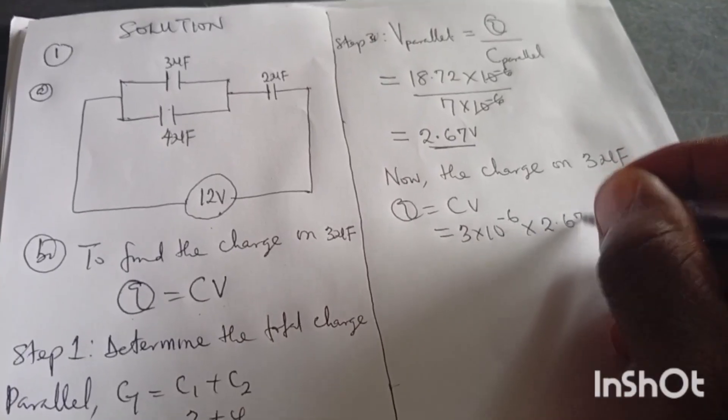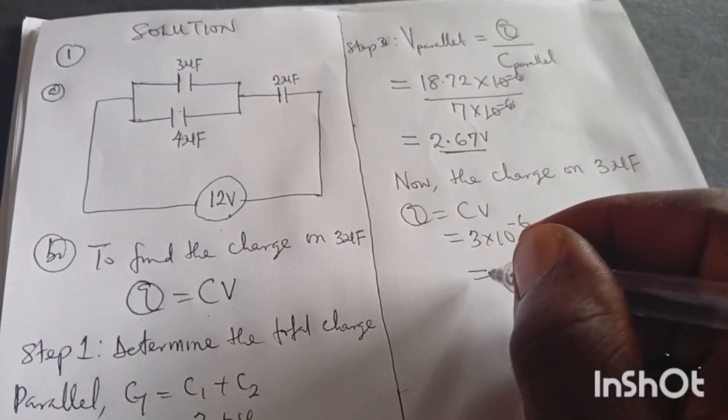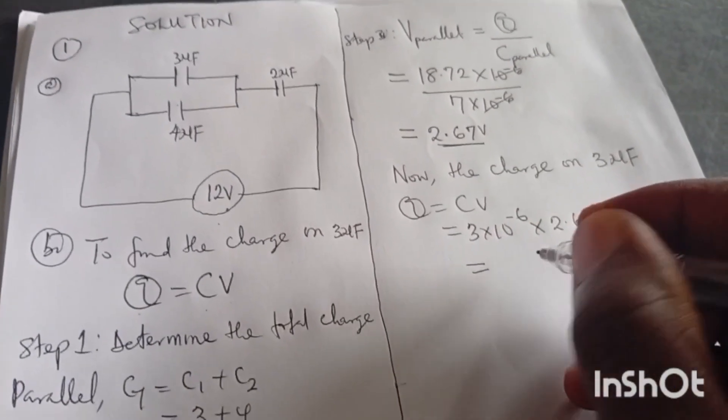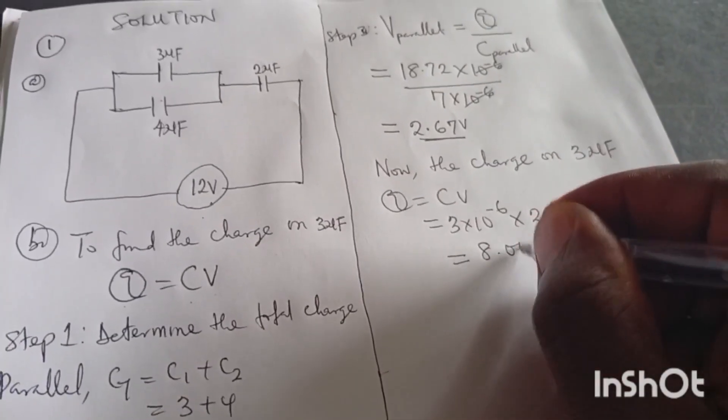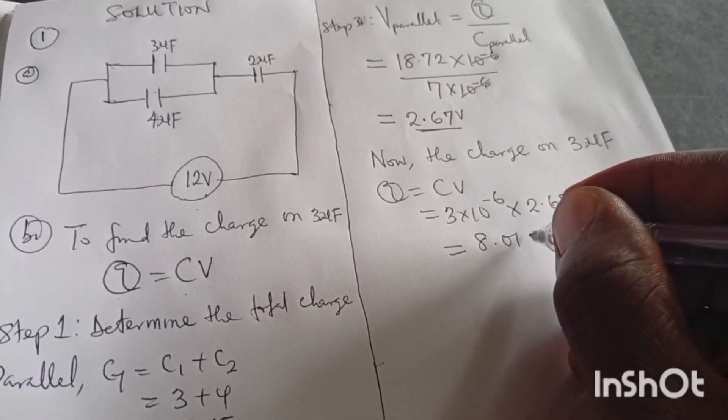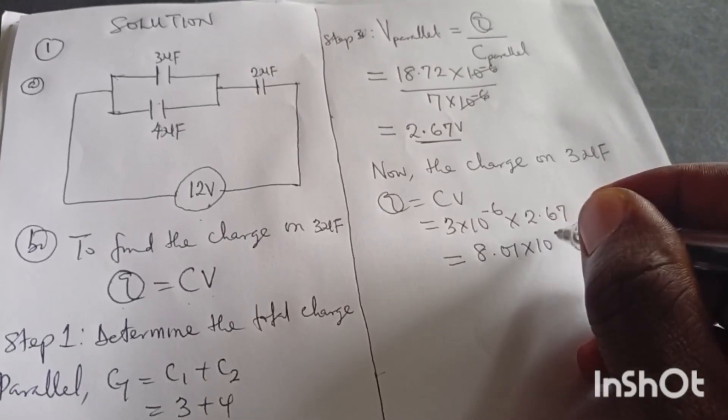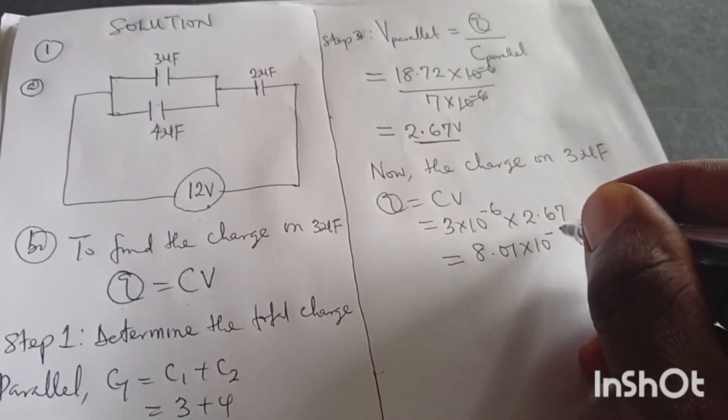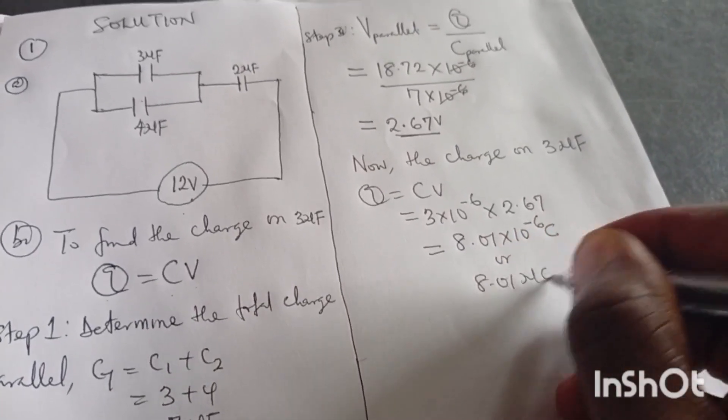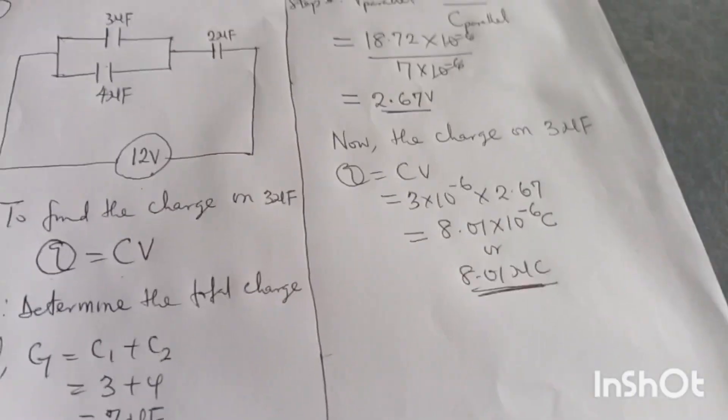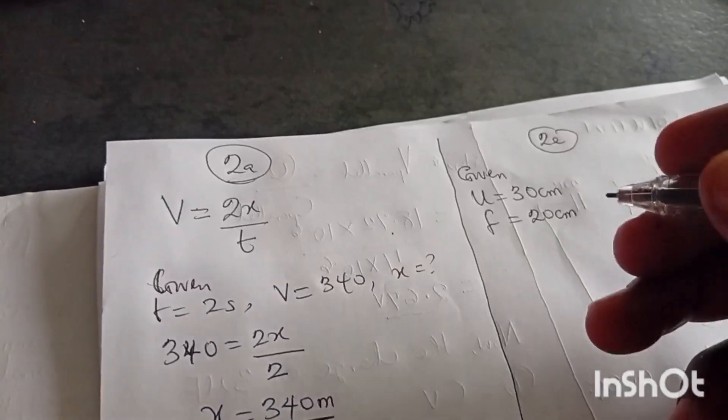If I use my calculator very well, I will be getting 8.01 times 10 to the minus 6 coulombs, or you say 8.01 microcoulombs. And that's how we settle that.